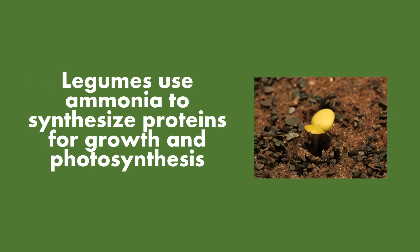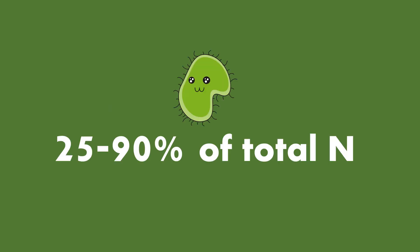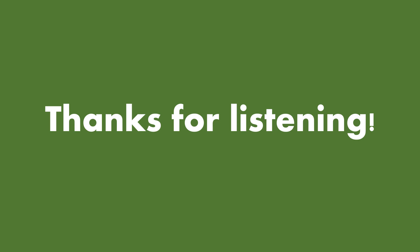Once the N2 has been converted to a more available form, the legumes can then use the ammonia to synthesize proteins for growth and photosynthesis. Biological nitrogen fixation is extremely important to plant growth, as soil bacteria fix about 25 to 90 percent of the total natural legume nitrogen. Hope you enjoyed this talk. Thanks for listening.